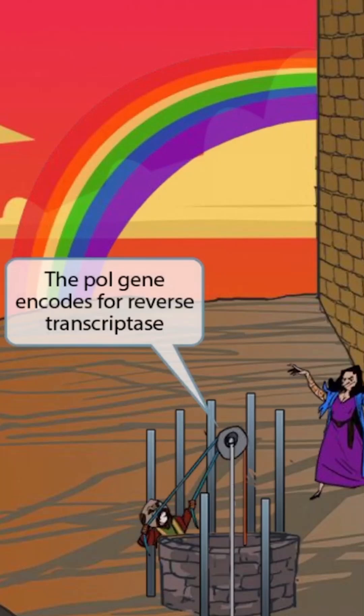Now notice that we've added several metal poles adjacent to the well. The poles are our symbol for the pol gene, and the pulley is our symbol for reverse transcriptase. So together these ideas should help you remember that the pol gene encodes for reverse transcriptase.